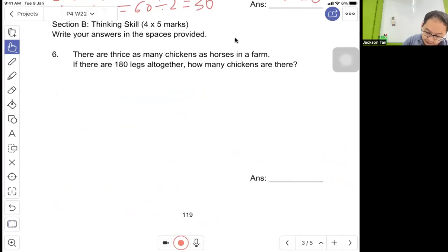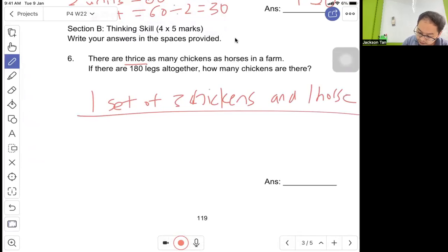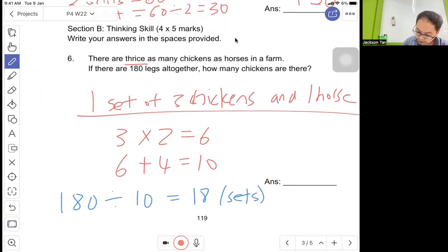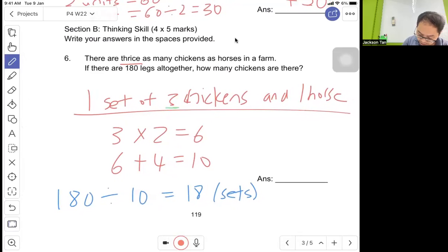Question 6: There are twice as many chickens as horses. If there are 180 legs altogether, how many chickens? One set of three chickens will have one horse. Three chickens have six legs, one horse has four legs, altogether 10. Now take 180 divided by 10 legs, so there are 18 sets. They ask for chickens, so one set has three chickens. 18 times 3 equals 54. There are 54 chickens.